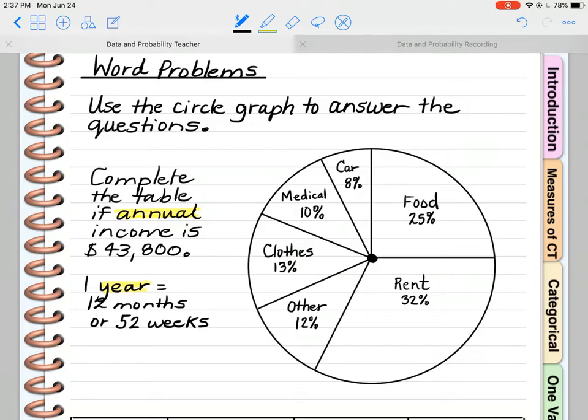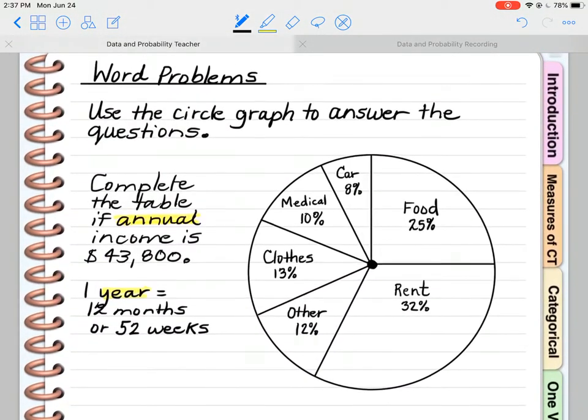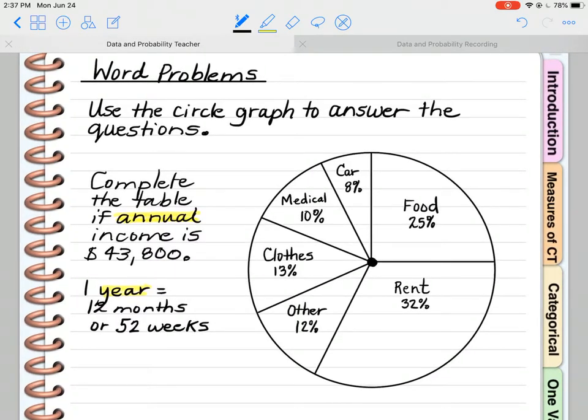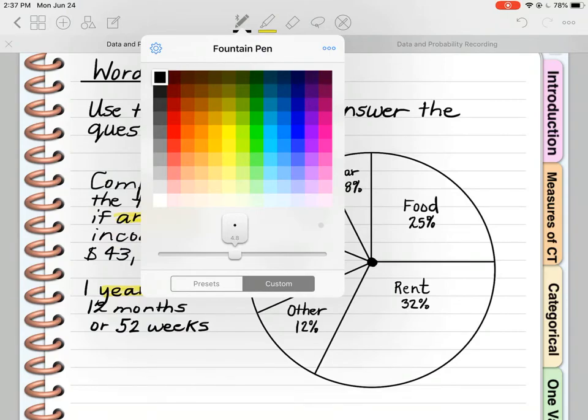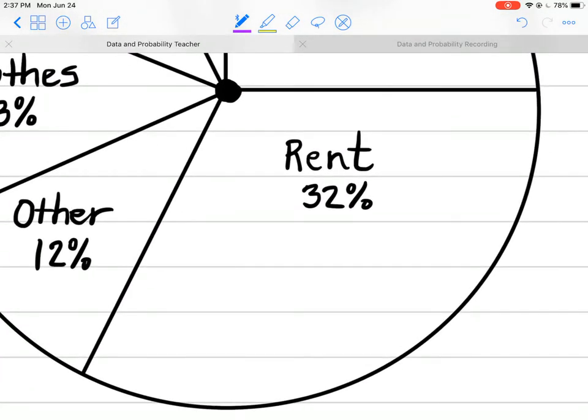The first thing I need to do is figure out the dollar amounts for each of my categories. I need to take that $43,800 and figure out what that comes up to be in terms of my categories. I'm going to zoom in so you can see a little bit more of what I'm doing, and I'm going to start with rent.